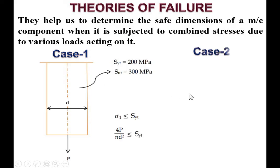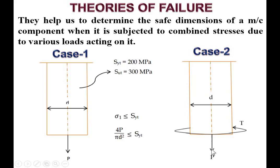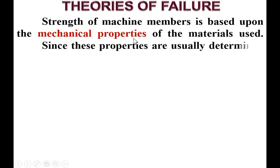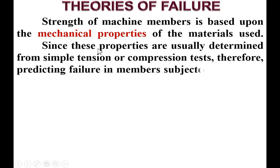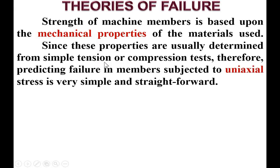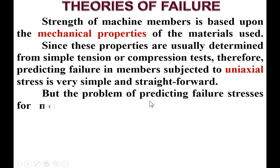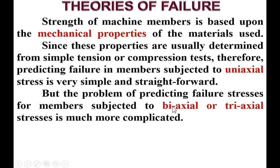Now consider case number two. The same cylindrical shaft is subjected to axial load as well as twisting moment. At that time it is a little bit difficult to find the diameter. The strength of machine members is based on mechanical properties of materials, usually determined from simple tension or compression tests. Predicting failure under uniaxial stress is straightforward, but for biaxial or triaxial stresses it is much more complicated.